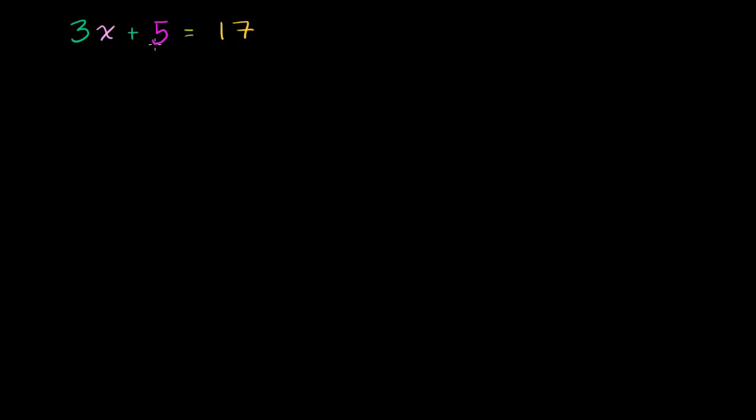Now before we even solve it, let's think about what it's saying. Let's solve it kind of in a tangible way and then we'll solve it using operations that hopefully will make sense after that. So 3 times x literally means, so let me write it over here. So we have 3 times x. So you literally have an x plus an x plus an x. That right there is 3x.